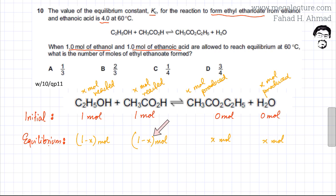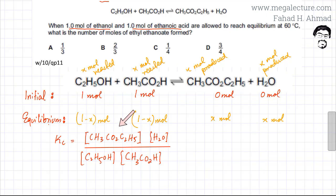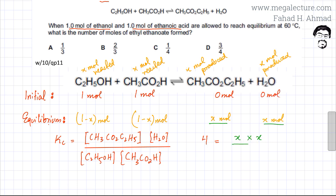Now we have all equilibrium moles in terms of x and we know Kc = 4, so we can write the expression and solve for x. Kc is the concentration of products divided by the concentration of reactants. Substituting: 4 = [x × x] / [(1 − x)(1 − x)], which simplifies to 4 = x² / (1 − x)².